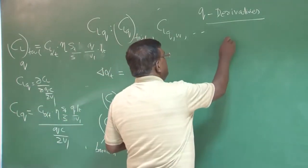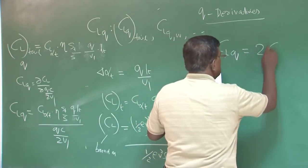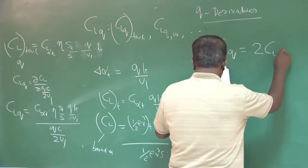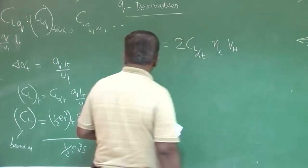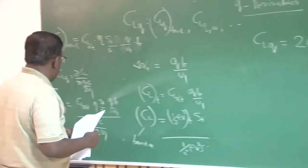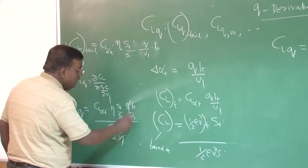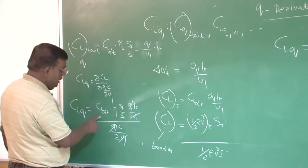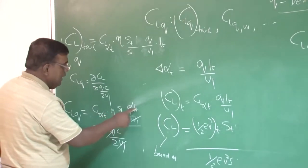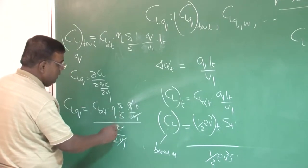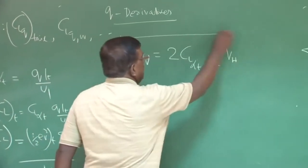So, I will get a CLq expression as 2 CL alpha tail into nita tail Vh. That is all. You see here, if I do this, this is get cancelled, u1, u1 get cancelled, this 2 goes up. So, 2 CL alpha tail, nita is nita t is here. ST Lt by S this C bar makes it Vh. So, Vh is here. So, this is the expression for CLq.